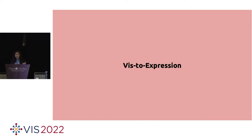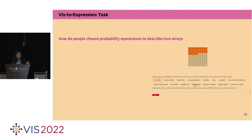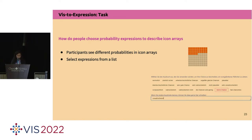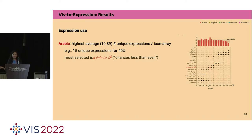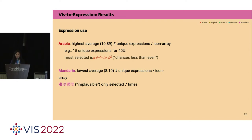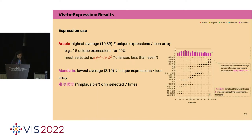The second experiment is the reverse of the first. We explore how people would choose probability expressions and assign them to visualizations. Participants see different probabilities in icon arrays and select expressions from a proposed list. We analyzed how people use those expressions. The Arabic version had the highest average number of unique expressions assigned to an icon array — 15 unique expressions out of 18 were assigned to the 40% icon array. In contrast, Mandarin had the lowest average, suggesting participants were more consistent in assigning verbal expressions to visual representations.